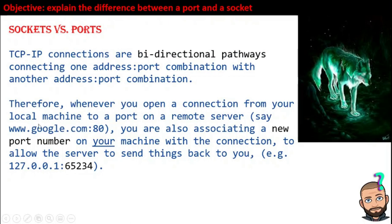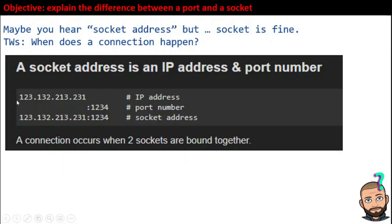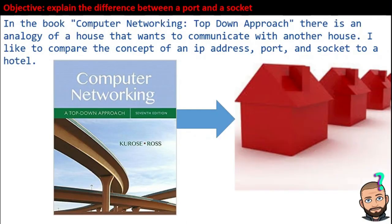You are also associating a new port number on your machine with the connection. On your machine, it could be whatever port number your machine or the program you're running decides — like Firefox, Chrome, or Edge. Other applications also require network connections, like a Sims game that connects to see other people in the world. The code in the game would have a port number. So: IP address plus port number, together we get a socket address — though I typically just hear it called a socket.